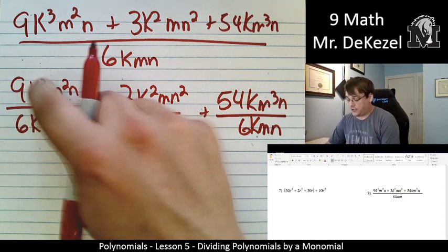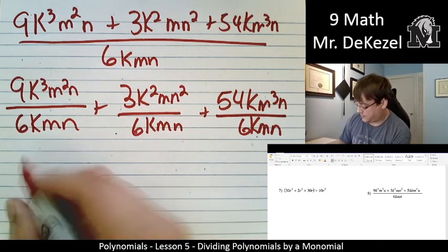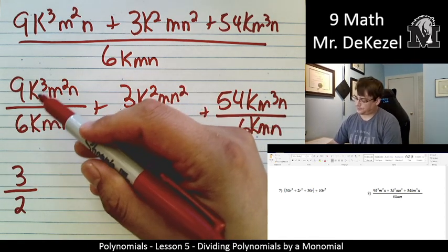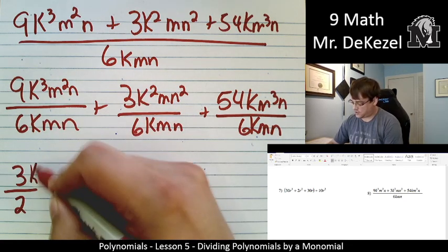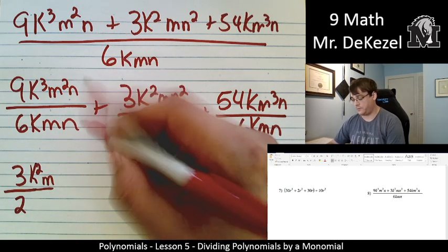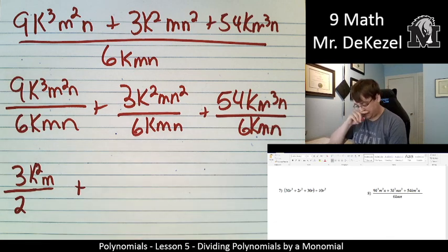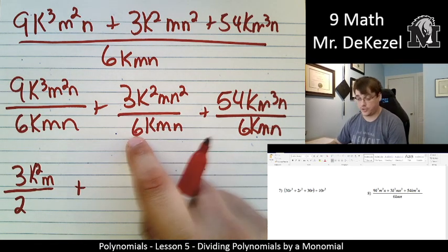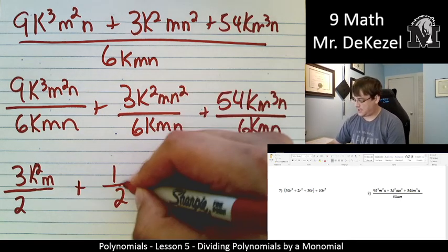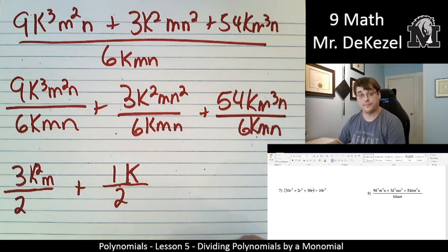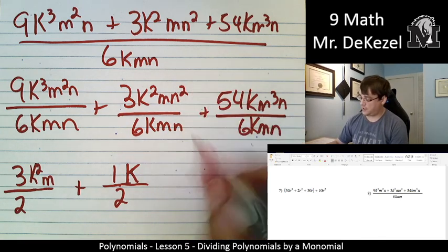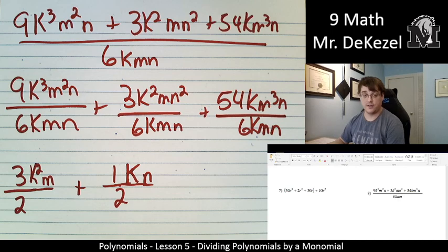I can only reduce because 6 doesn't go into 9 evenly. So I'm going to reduce that to 3/2. I'm going to reduce my k's. 3 minus 1. That's 2. So k². 2 minus 1. It's just 1. And the n's cancel. 1 minus 1 is 0. Again, we can't do this evenly, but we can reduce. That would be 1/2. k² minus k. So that's just k up top. m minus m. So that gets rid of it completely. And then 2 minus 1 is 1. So kn/2.